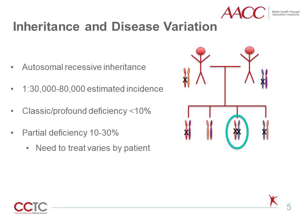Biotinidase deficiency is a genetically inherited enzymatic defect that follows autosomal recessive inheritance. The gene is encoded on chromosome 3, so both copies must carry pathogenic alterations to cause disease. The estimated incidence is 1 in 30,000 to 80,000, depending on the population. In the state of Washington, we have approximately 85,000 births per year and typically observe one true positive case per year. Other countries may experience much higher incidence; Brazil and several Middle Eastern countries have reported estimates as high as 1 in 9,000.